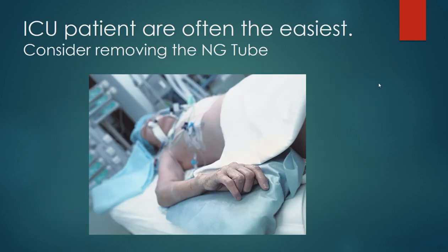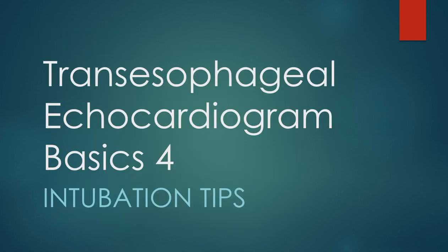ICU patients are often the easiest since they already have sedation on board. Consider removing the NG tube if you're having trouble advancing the probe. You can get your finger far back into the oral pharynx and follow along with the endotracheal tube. Often you need jaw thrust as opposed to putting the chin to the chest — we'll talk more about that in our next discussion on intubation tips.